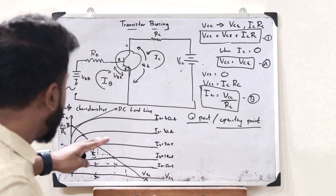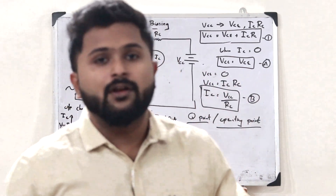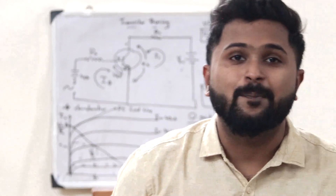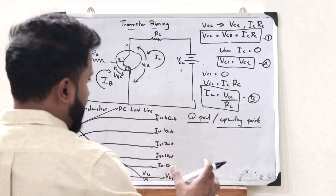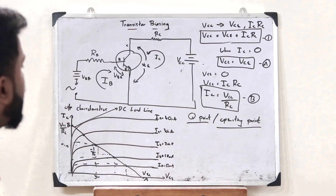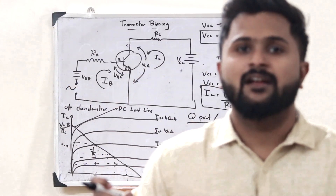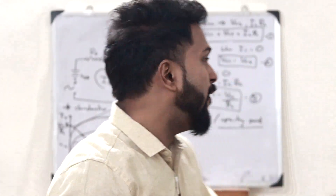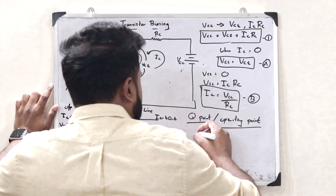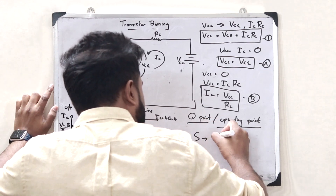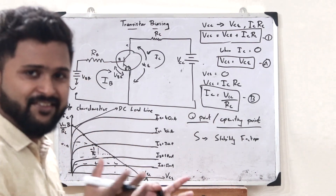Now, if we talk about the stability of this particular Q point, with the change in temperature the operating point would also change, because the device parameters also get changed. Therefore, the designed biasing circuit should provide stability such that even if there is a change in temperature, there would be very minimum change in the operating point. The stability of this operating point is given by the stability factor S, which indicates the change in operating point with the change in temperature.